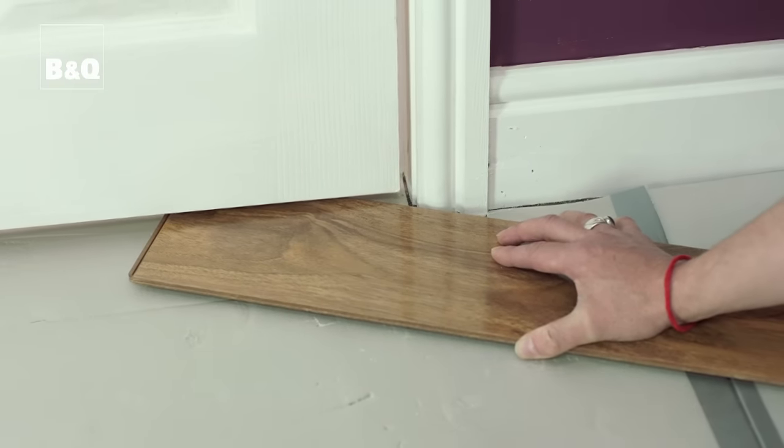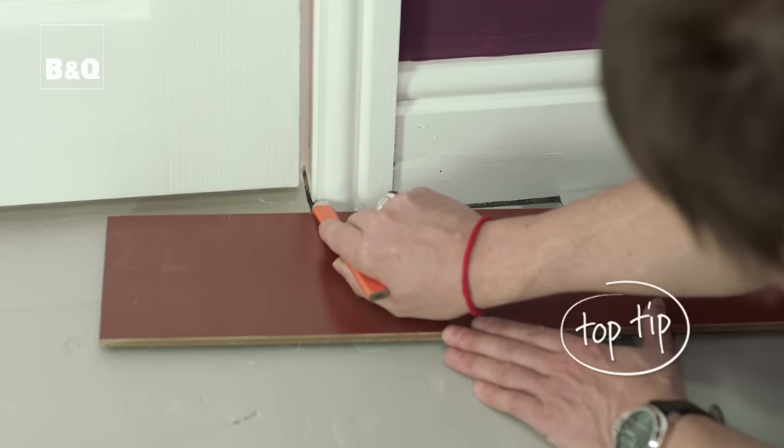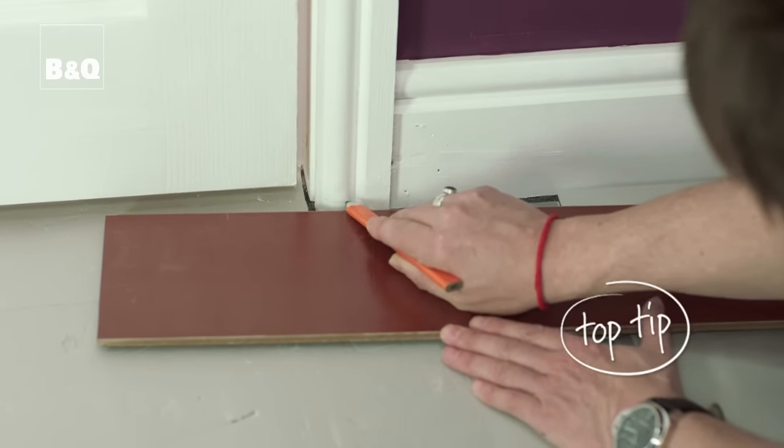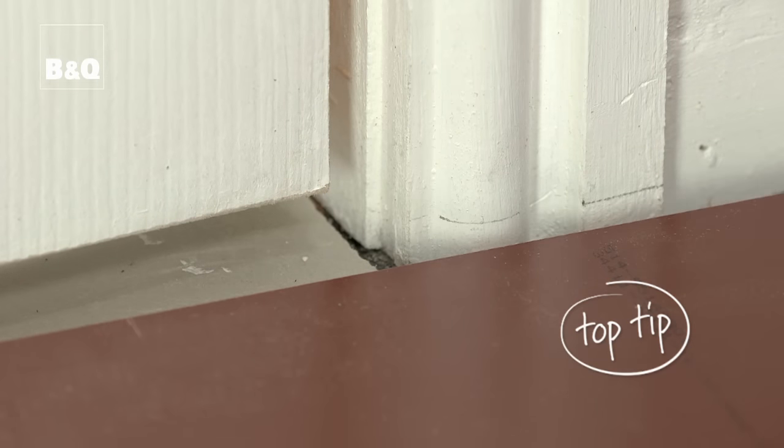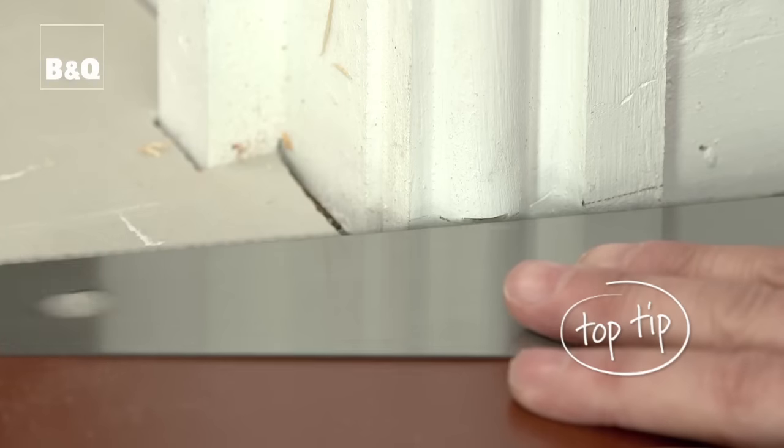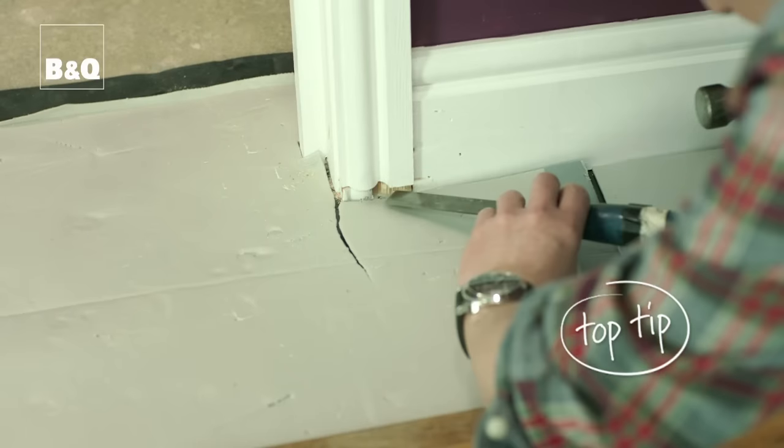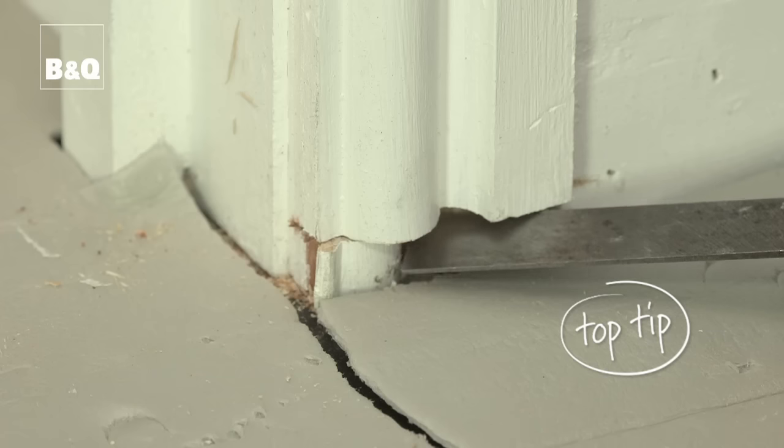If not, you'll need to remove the door and trim it down. Top tip, don't try and cut the flooring to fit. You'll get a much neater finish if you trim the architrave like this, so the underlay and flooring fit underneath. Just use a chisel to remove the waste piece of wood.